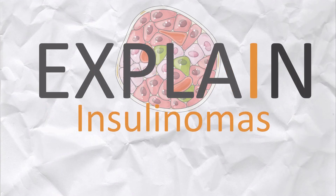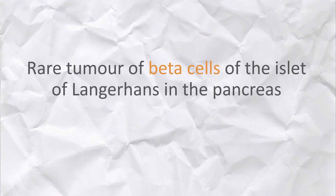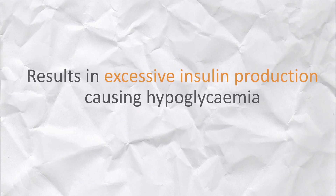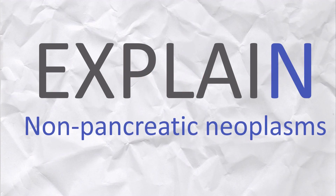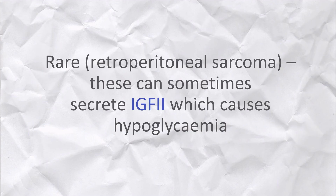I is for insulinoma, which is quite rare. They secrete insulin, causing hypoglycemia. And N is for a non-pancreatic neoplasm, which is also quite rare and includes conditions such as a retroperitoneal sarcoma.